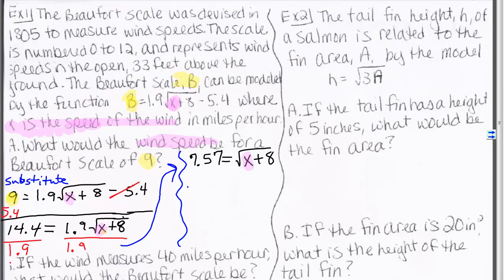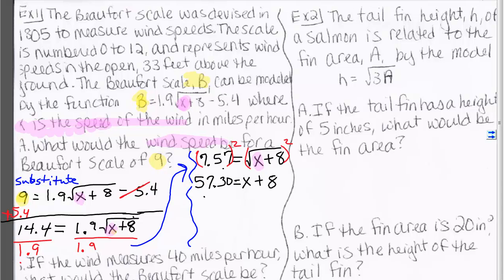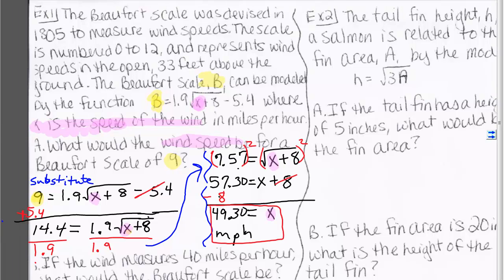This gives us 7.57 equals the square root of x plus 8. Square both sides and subtract 8 from both sides. Our answer is 49 miles per hour. This is a word problem, so we do have a word answer.